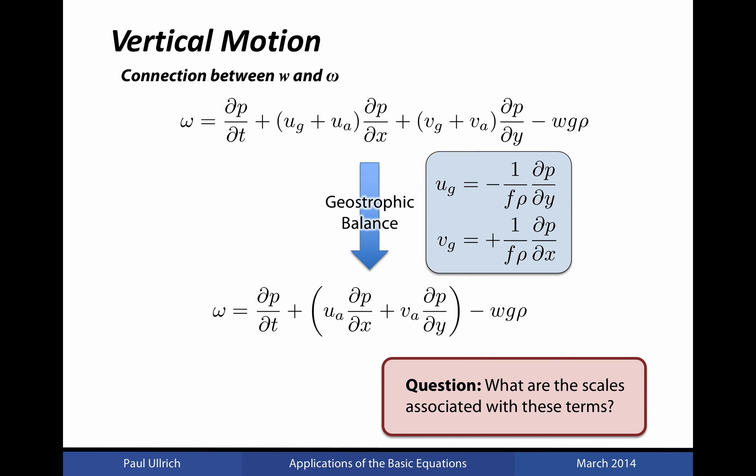This leaves us with a relationship between the vertical pressure velocity and the vertical velocity in height coordinates. That is, the vertical pressure velocity equals a term related to the Eulerian change in pressure with respect to time, a term associated with the advection of pressure by the ageostrophic flow, and a term associated with the vertical velocity in height coordinates.